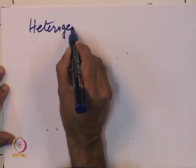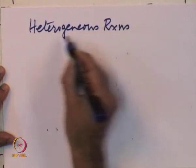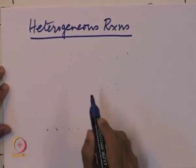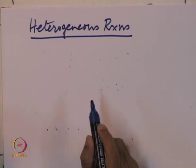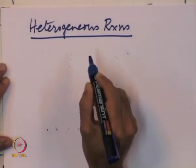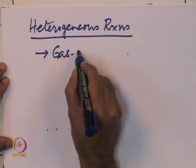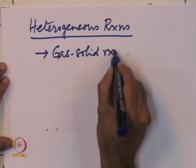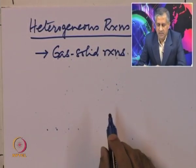However, matters get somewhat complicated when the reactants and catalyst are distributed among different phases. These are what are called heterogeneous reactions, and the simplest of these are those in which there is a continuous phase and a dispersed phase — just two phases. We have already seen one class of such reactions: gas-solid reactions, of which there are two types.